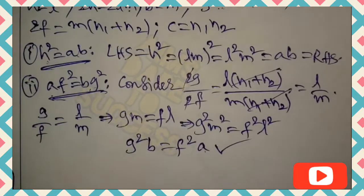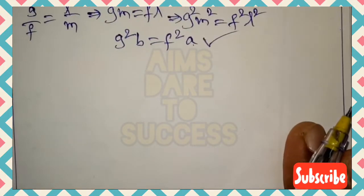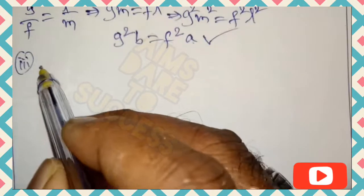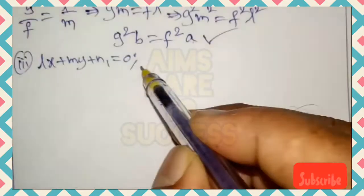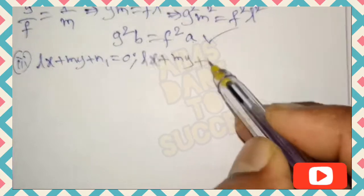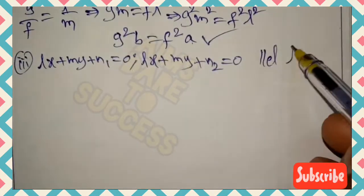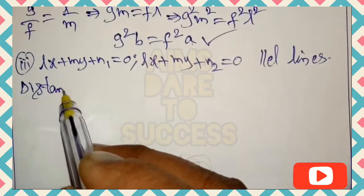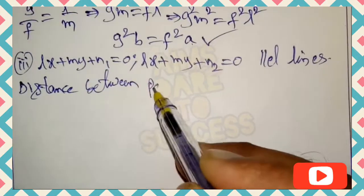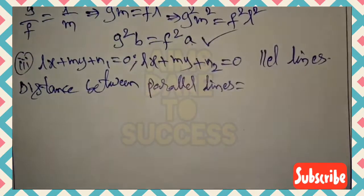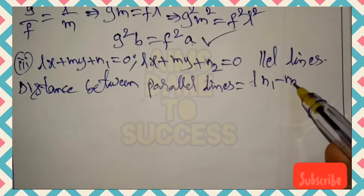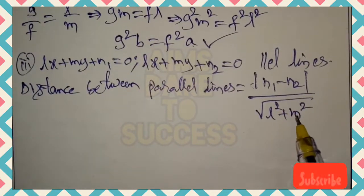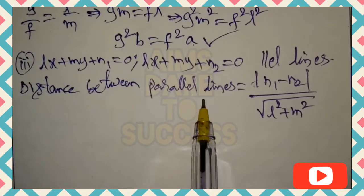Now for the very important third part: the distance between two parallel lines. The two lines are lx + my + n₁ = 0 and lx + my + n₂ = 0. The distance between two parallel lines is given by |n₁ − n₂| / √(l² + m²). This is the key formula to apply.